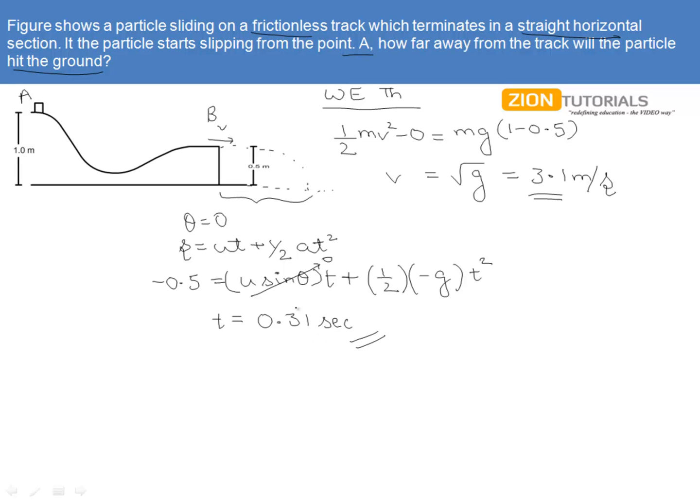This is the time this particle takes to reach from point B to the ground. For that much time it is moving in the horizontal direction, so the horizontal distance will be the horizontal speed times the time, which is 3.1 times 0.31 seconds, giving us a distance of approximately 1 meter. This is the distance that the particle will be covering in the horizontal direction before coming into contact with the ground.